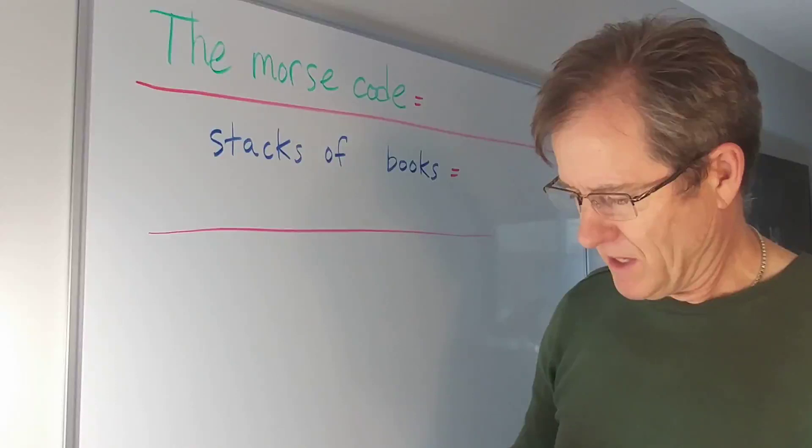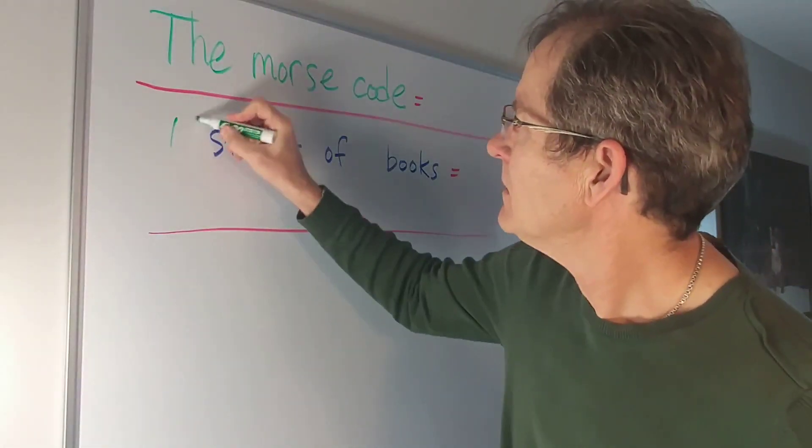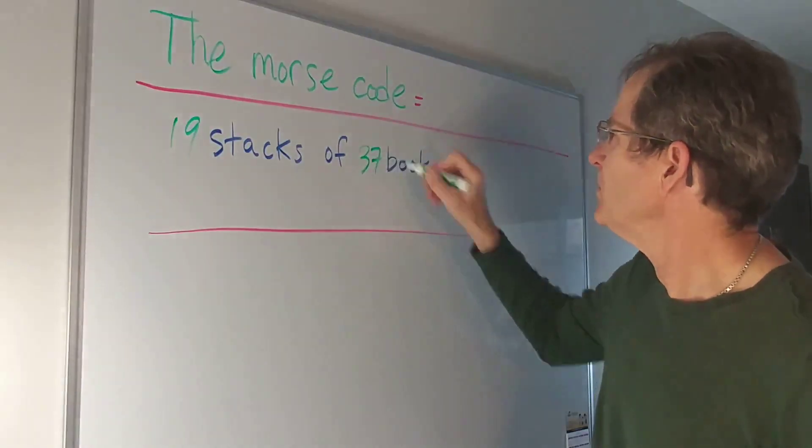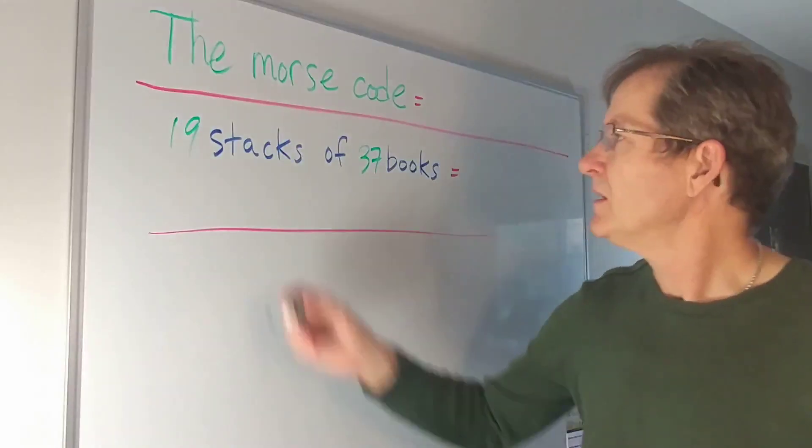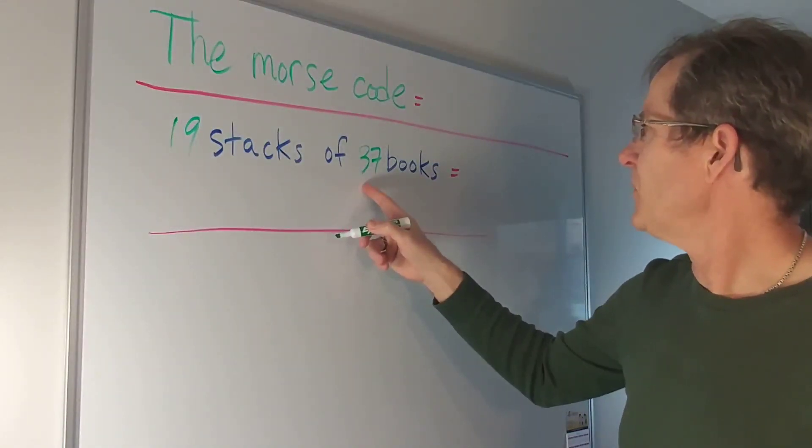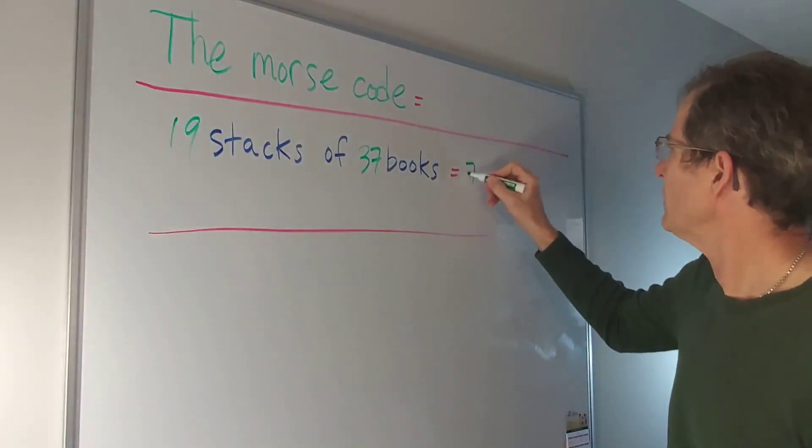Now let's imagine you have, let's say, 19 stacks of about 37 books. First of all, how many books would you have? Well let's see, 20 times 37 is 740, so you take away 37, that'd be 703.